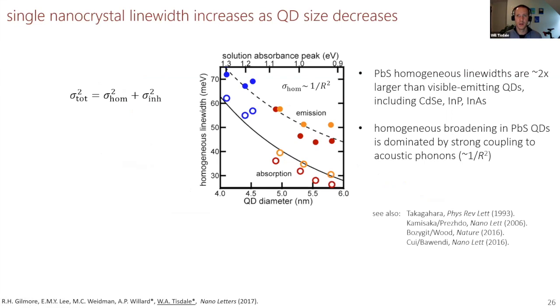You can also do things like inferring the single nanocrystal line width. So we get the inhomogeneous line width or the site energy disorder directly from our KMC model. We measure the total ensemble line width through ensemble absorption and emission measurements, and that allows us to infer the homogeneous or single nanocrystal line width. We can do that both for absorption and emission. We see that these lead sulfide homogeneous line widths are typically twice as large than visible emitting quantum dots like cadmium selenide, indium phosphide, or indium arsenide. And they're strongly size dependent, that the smaller nanocrystals have much larger homogeneous line width, which seems to be dominated by strong coupling to acoustic phonons in these lead salt quantum dots.